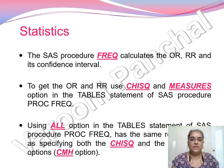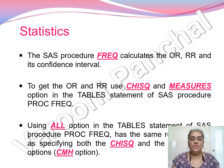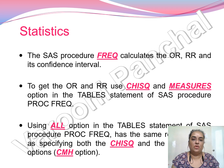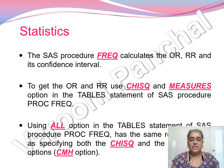The SAS procedure PROC FREQ calculates the odds ratio, relative risk, and its confidence interval — the default is 95% confidence interval in SAS. To get the odds ratio and relative risk, we use the chisq and measures options in the table statement of PROC FREQ. Even if you use the 'or' option in the table statement, it has the same result as specifying both chisq and measures options, so you can use either and will get the same results.